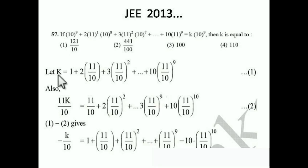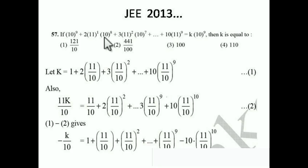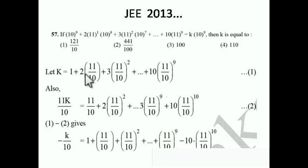Let k equal the left side divided by 10⁹. If we factor out 10⁹ from each term and cancel it, k becomes: 1 + 2·(11/10) + 3·(11/10)² + ... + 10·(11/10)⁹. So k is a series with coefficients 1, 2, 3, ... and common ratio 11/10. The terms run from (11/10)⁰ up to (11/10)⁹.